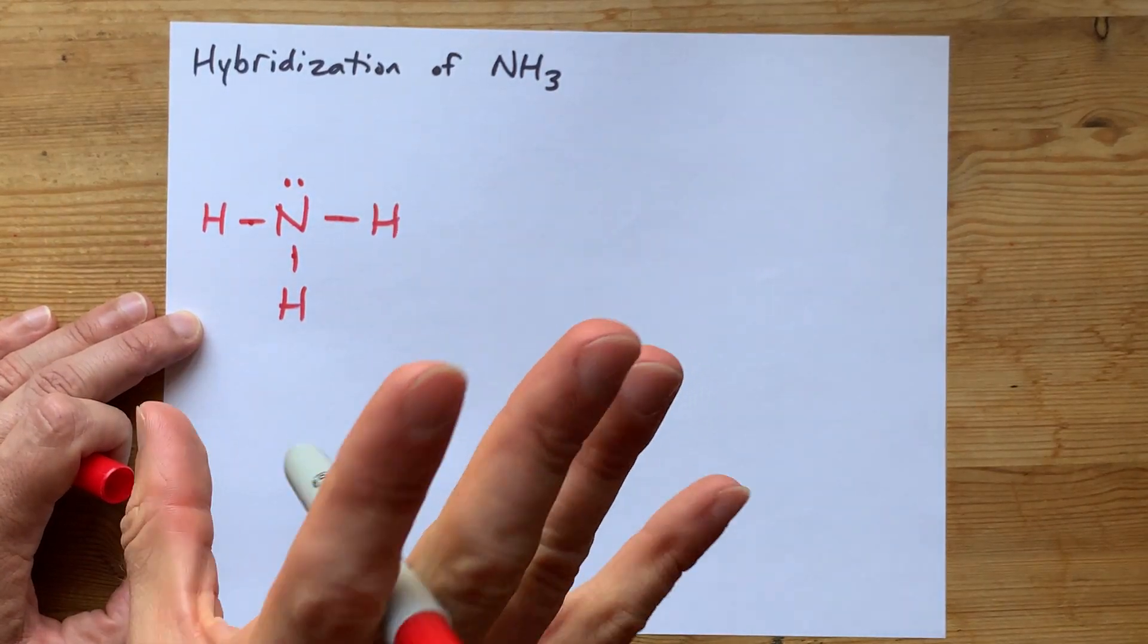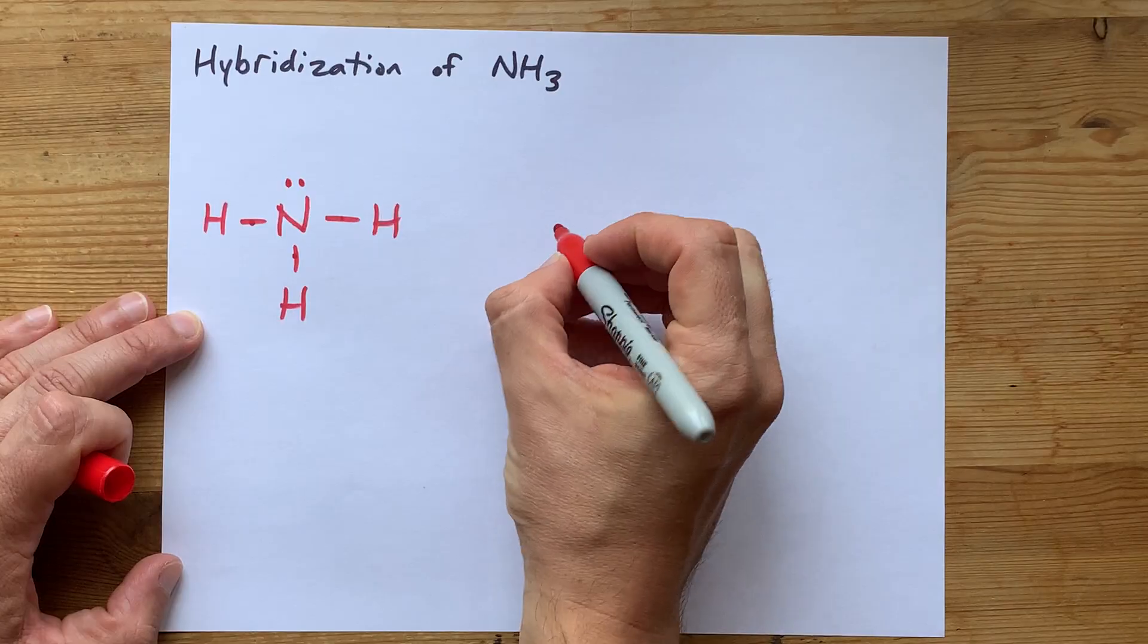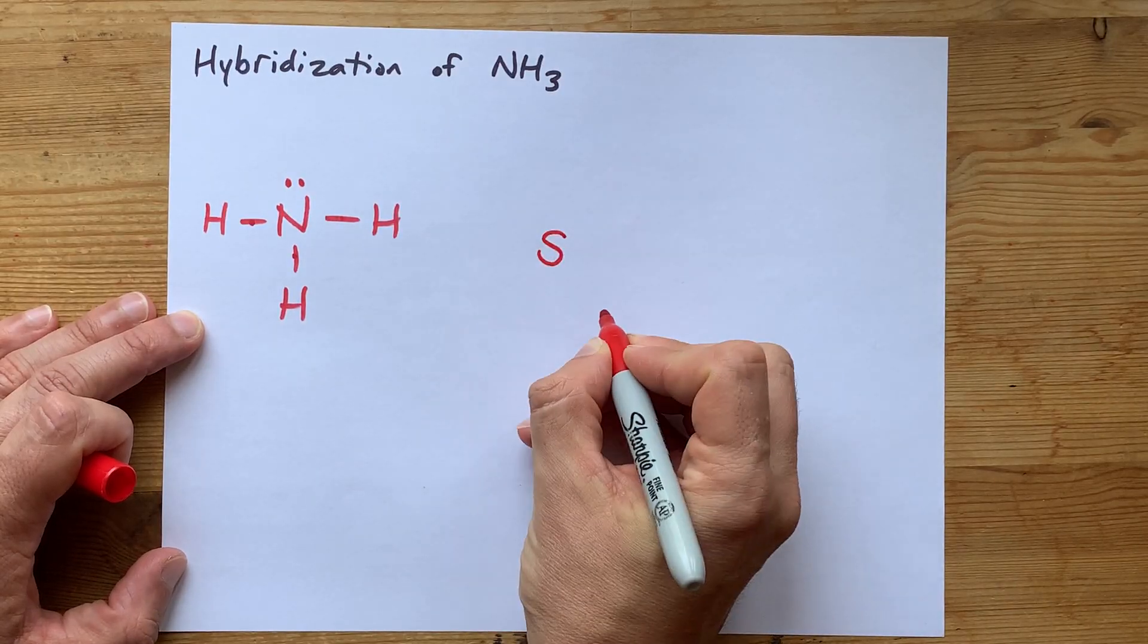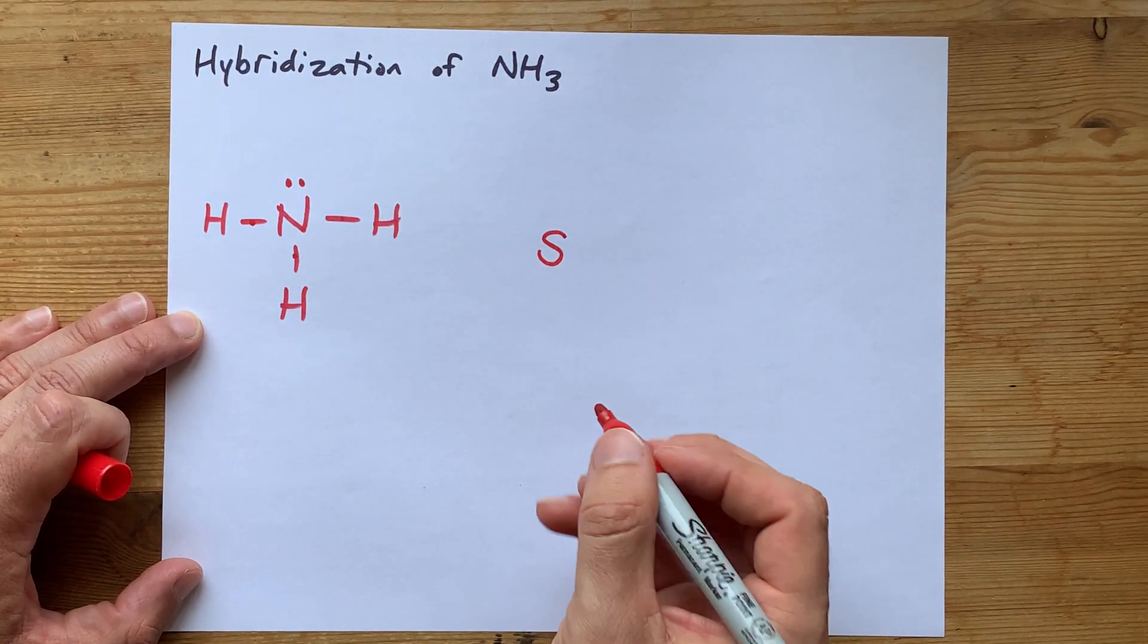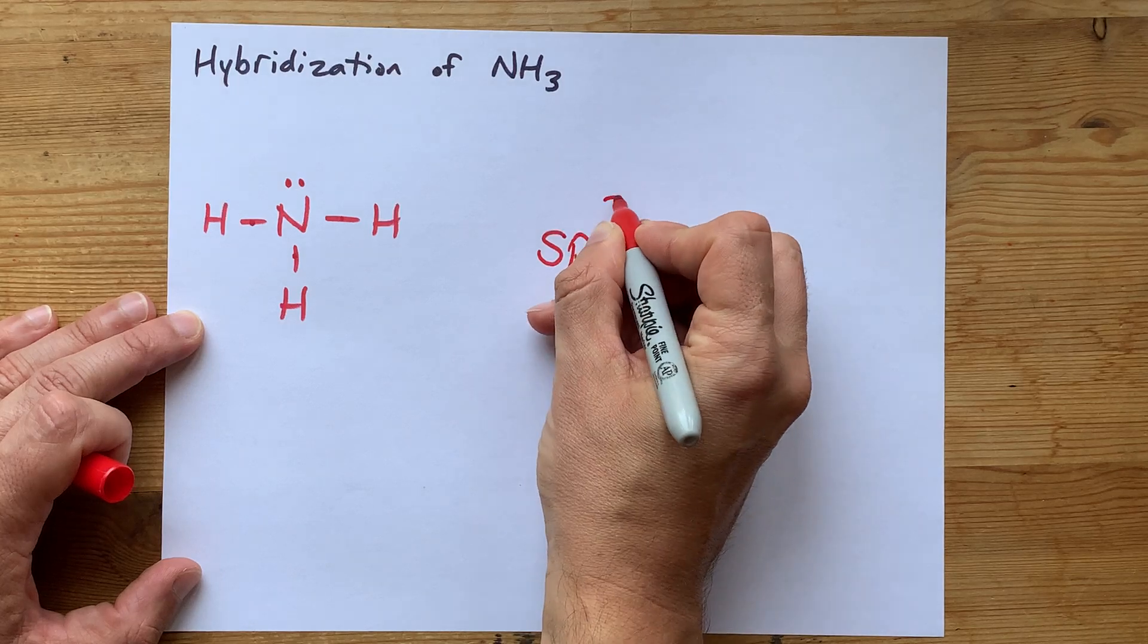are all in hybridized orbitals. That means you'll need to hybridize together an S, you know, the 2S, and then all three of the Ps.